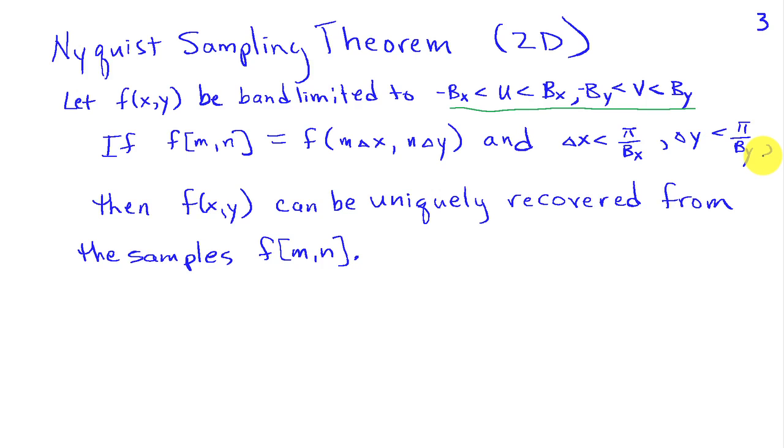This basically means that we need to achieve the same sort of two points per cycle sampling that we had to have in the time domain. If I go in the x direction and I have some sinusoidal variation in that direction of a certain frequency, then I'm going to need to have a minimum of two samples per cycle of that sinusoid. The same holds, of course, in the y direction.